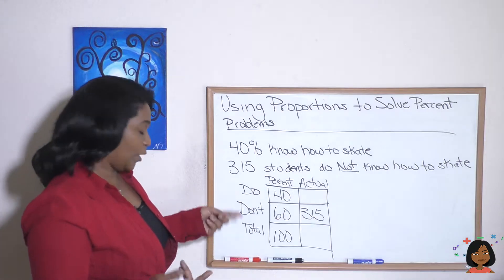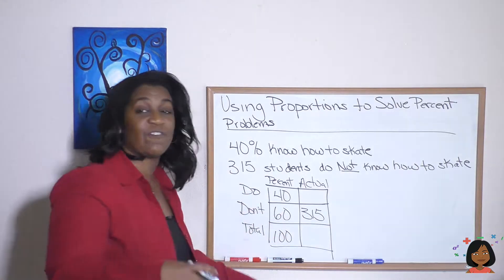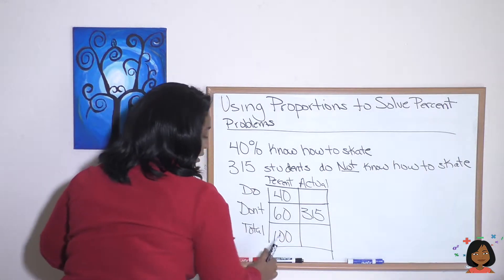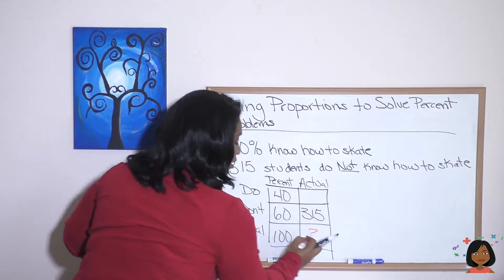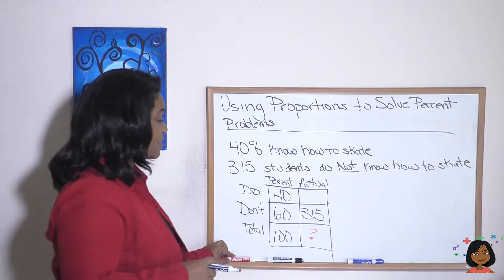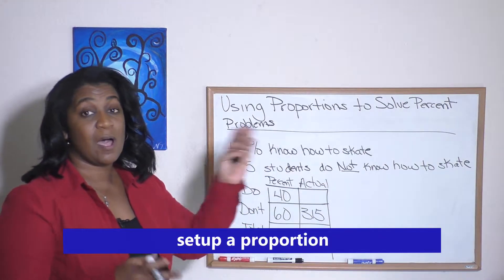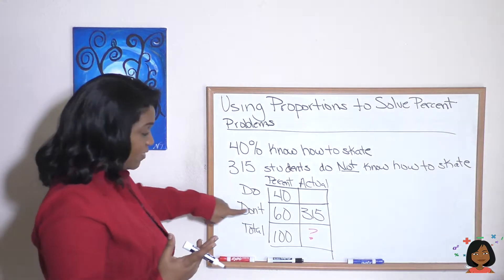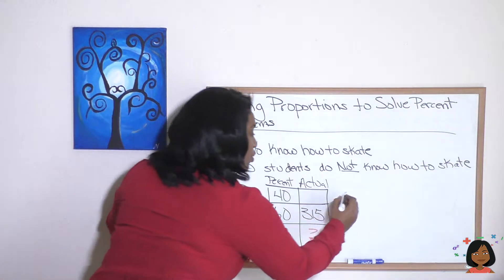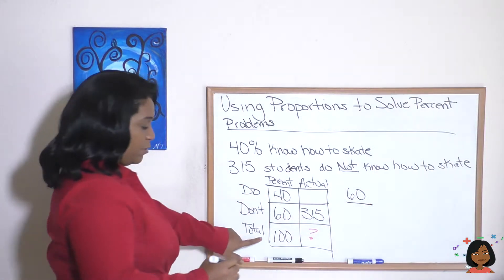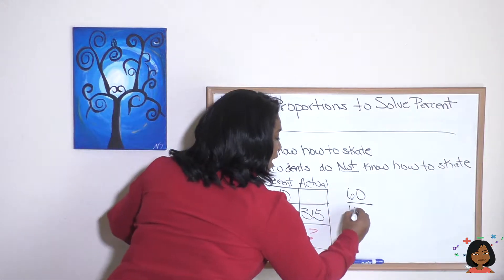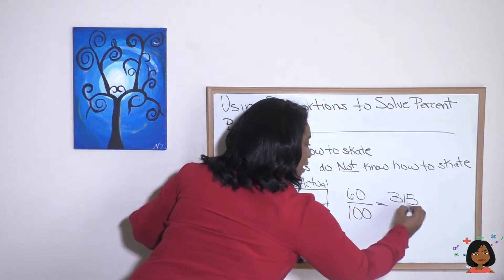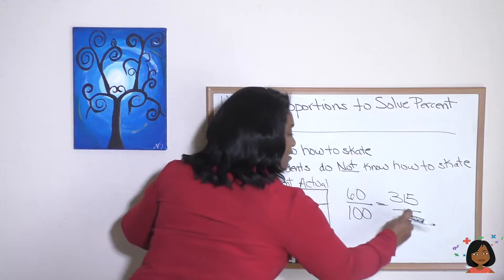Now what do they want us to find? They want us to find how many students are in the class — that's the total actual column. We can now use this to set up a proportion. We're going to use the row that we have complete information on. That is the don't row: 60 over 100 equals 315 over the question mark — that's what we're looking for.